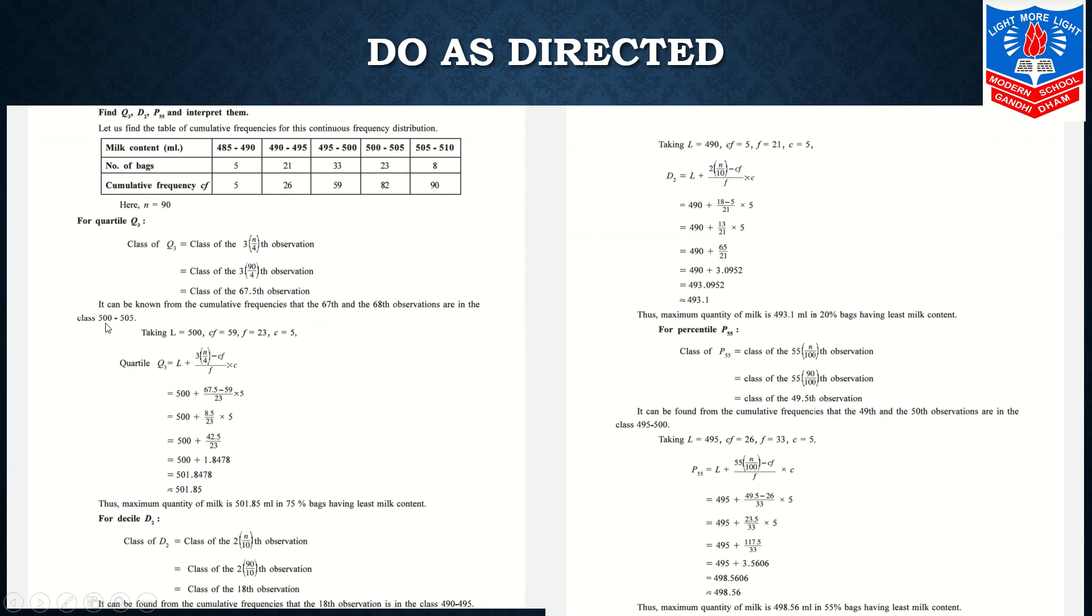Taking L as 500, CF is 59 - the prior class value. Frequency of that class is 23. CS is 5, our class length is 5. Put all the details in the formula: Q3 equals L + (3N/4 - CF)/F times C. L is 500 + (67.5 - 59)/23 times 5. Do the calculation, finally you will get 501.85.